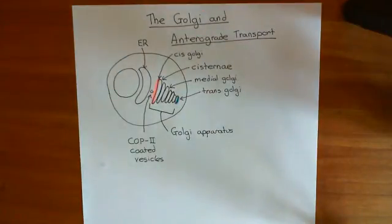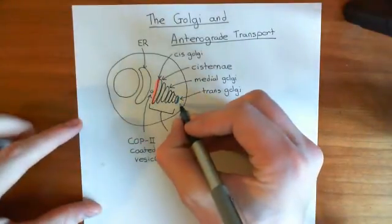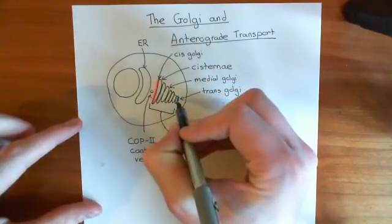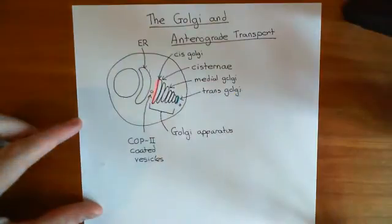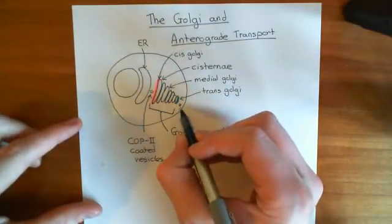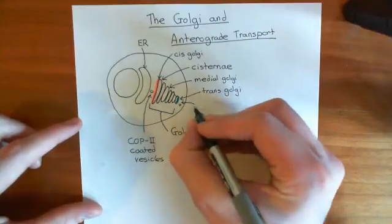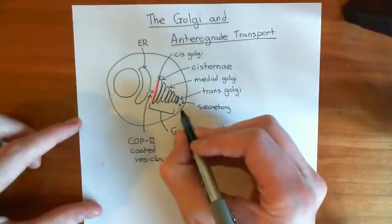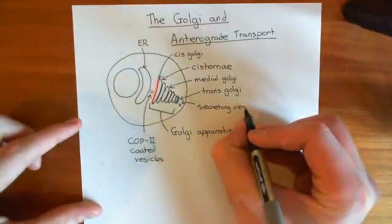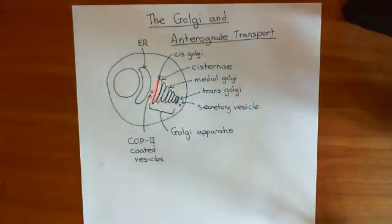So that's a little bit of terminology about the Golgi. What will happen is the protein will make its way through the Golgi apparatus — coming in at the cis side from one of these COP2-coated vesicles, then making its way to the trans-Golgi, and then being released in a secretory vesicle, which can potentially fuse with the plasma membrane.